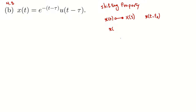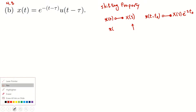This is the time-shifted version of x(t). Then the Laplace transform for this time-shifted version can be found using the Laplace transform of x(t) itself, and that's X(s) times e to the power of minus s·t0. This is the shifting property.